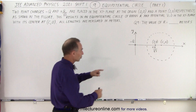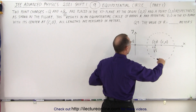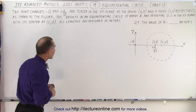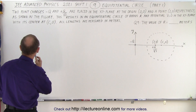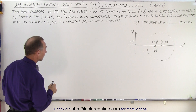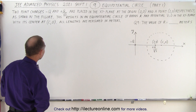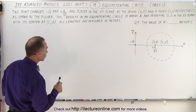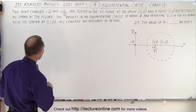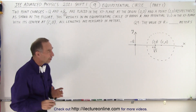We have a situation where we have two charges, negative Q and Q over the square root of 3. They're 2 meters apart and we're going to find a circle in the plane where the potential equals 0. The problem states that two point charges minus Q and plus Q over the square root of 3 are placed in the XY plane at the origin and at the point (2, 0) respectively, as shown in the figure. This results in an equipotential circle of radius R and potential V equals 0 in the XY plane, with its center at C0. All lengths are measured in meters, and we're supposed to find the radius of that circle.